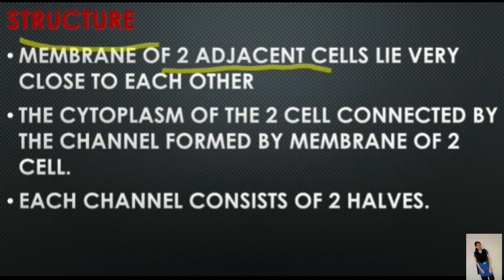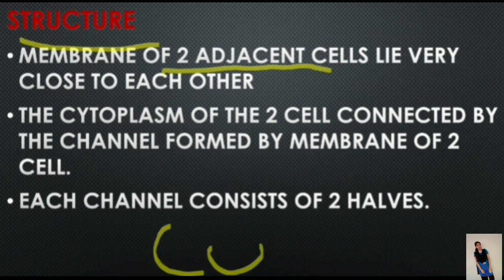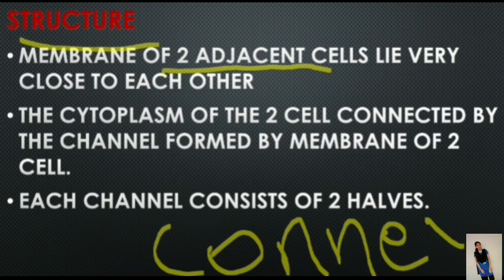Each channel consists of two halves, each half belonging to one of the two adjacent cells. Each half of the channel is surrounded by six units of protein, which is called connexon.